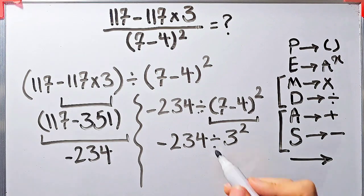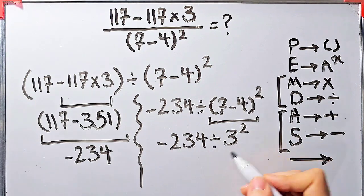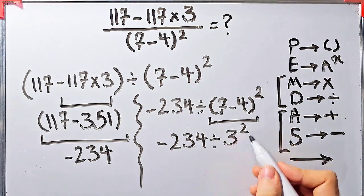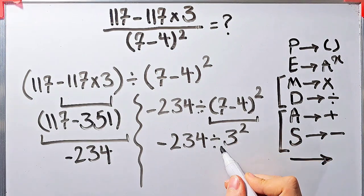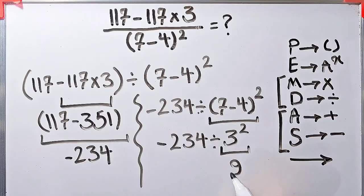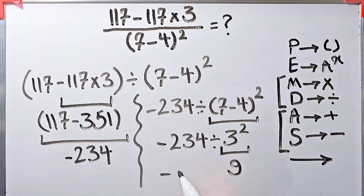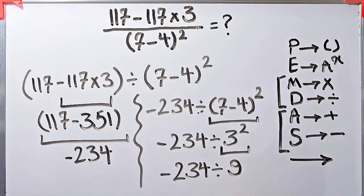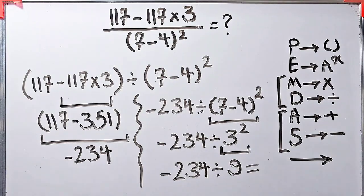Now we have division and exponent. First we simplify the exponent. 3 to the power of 2 equals 9. Negative 234 divided by 9 equals negative 26.